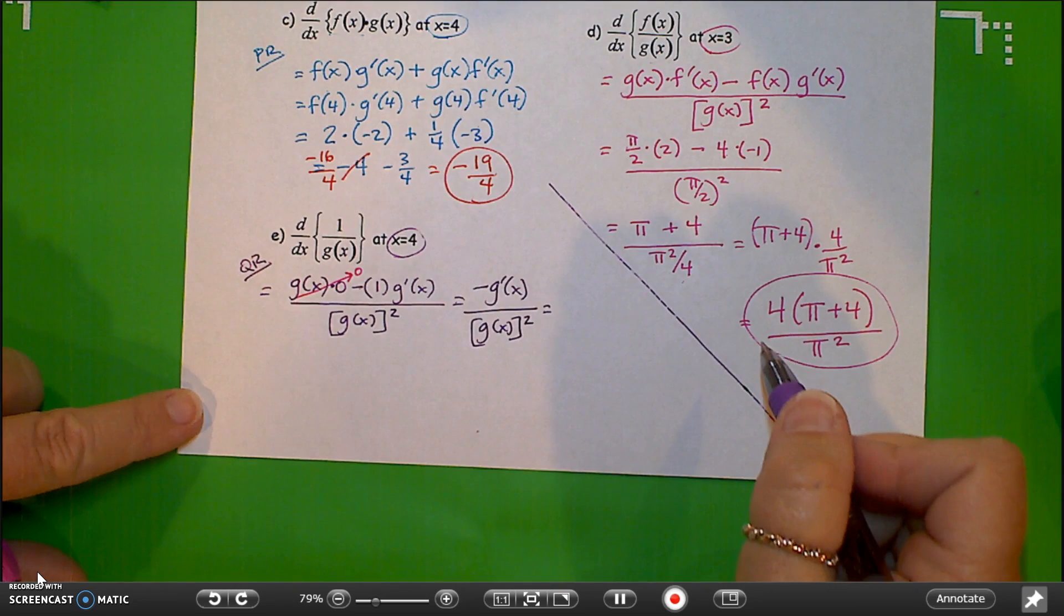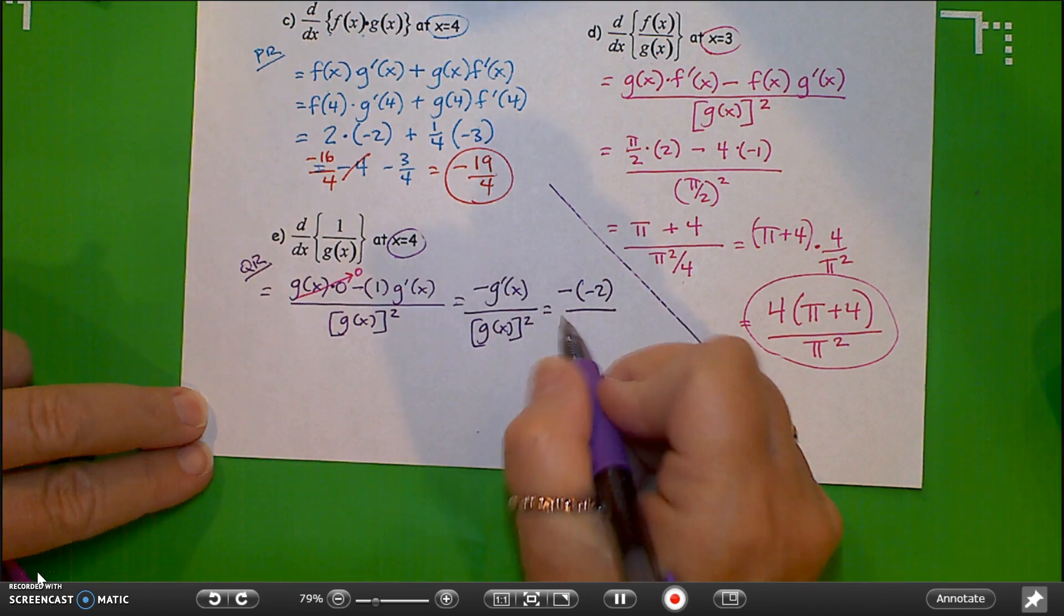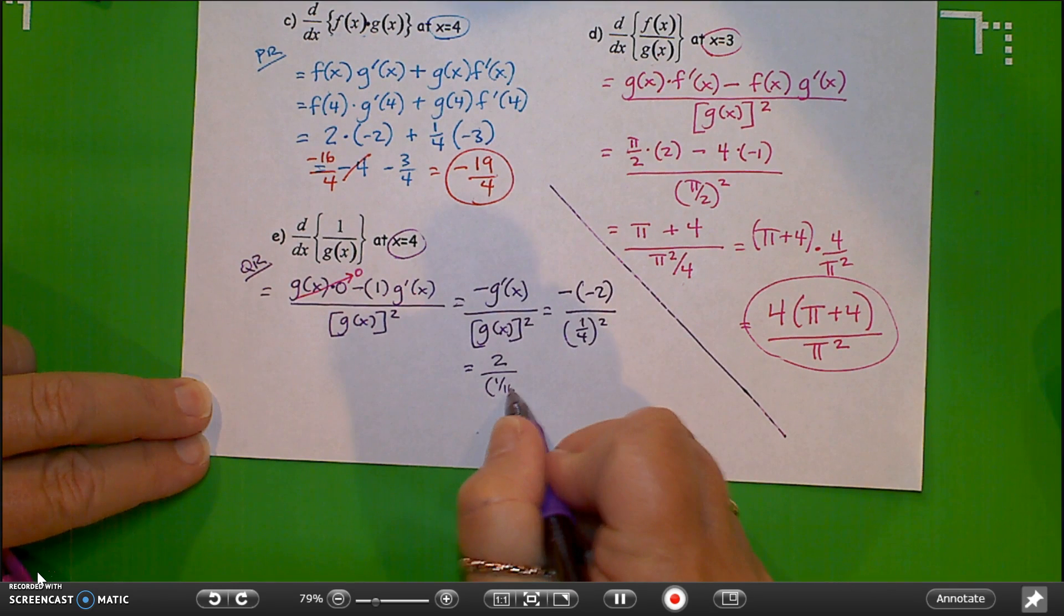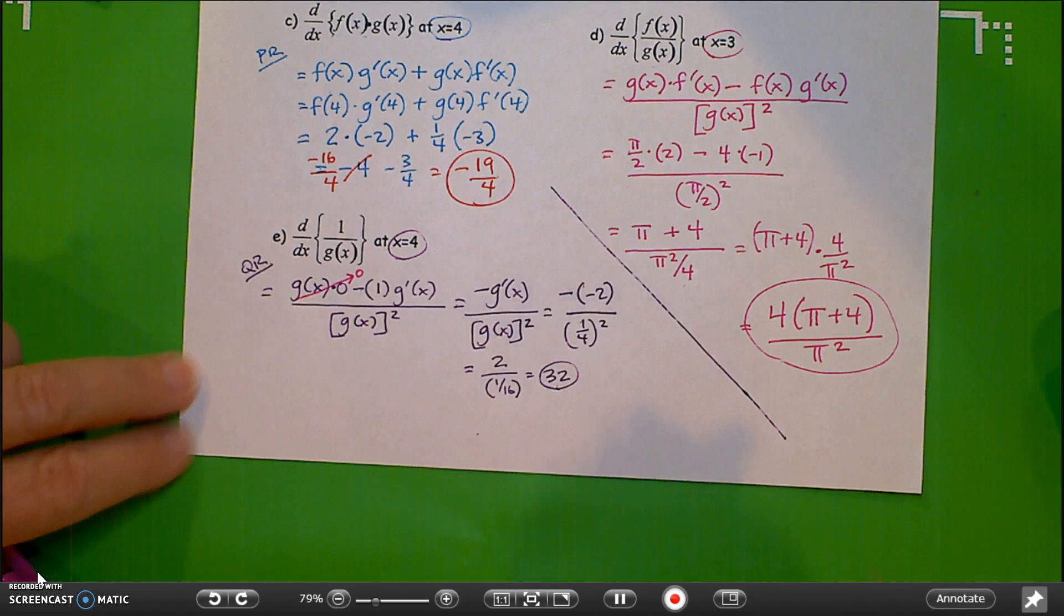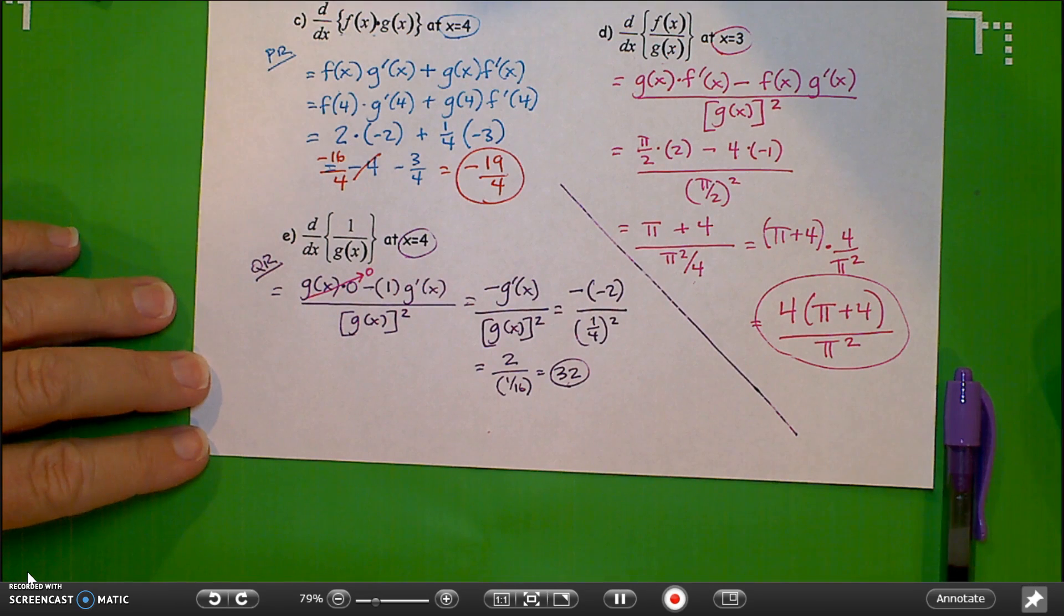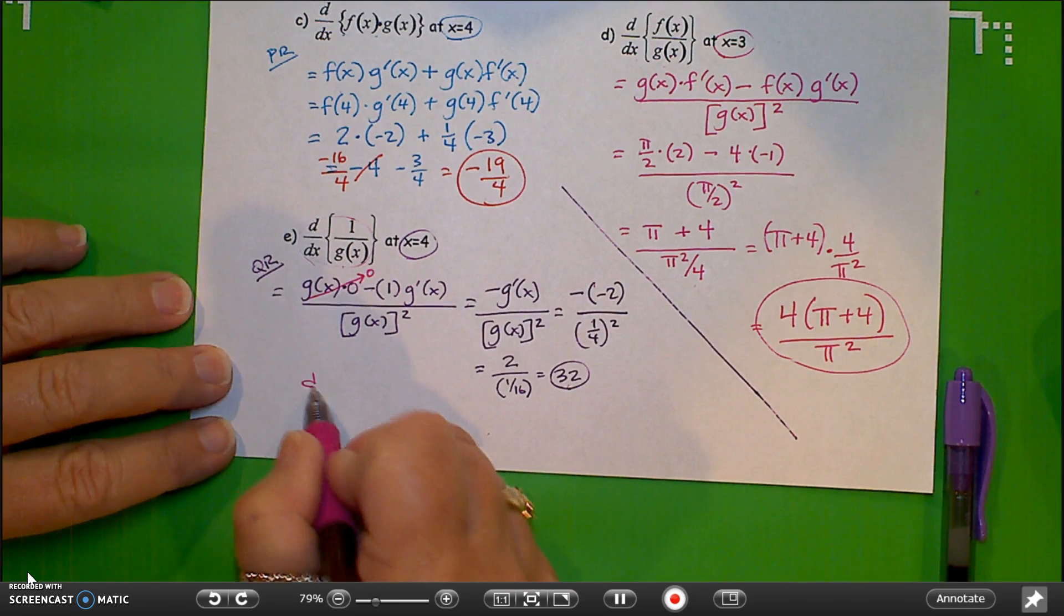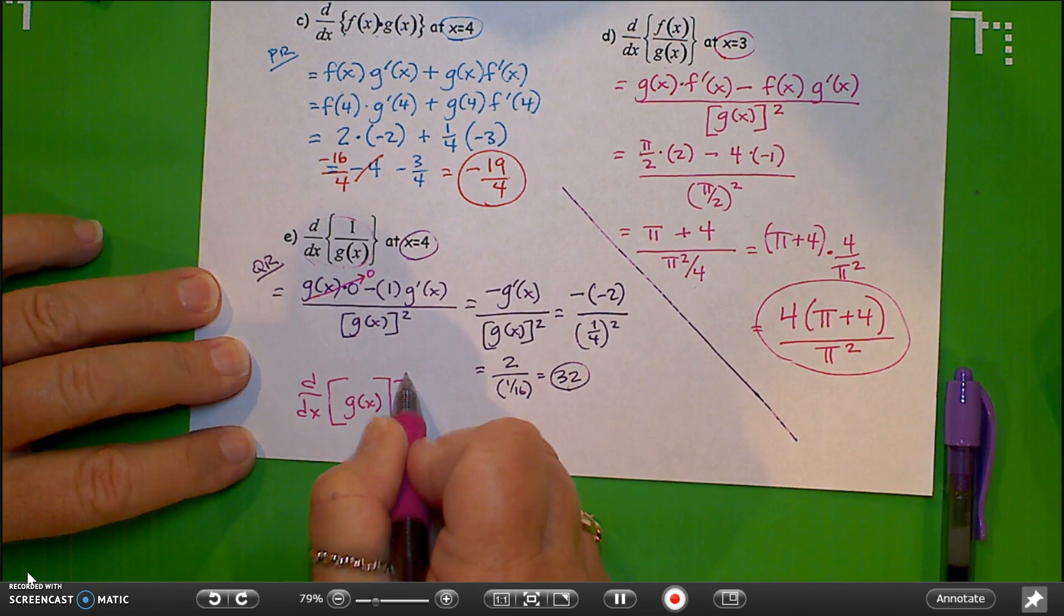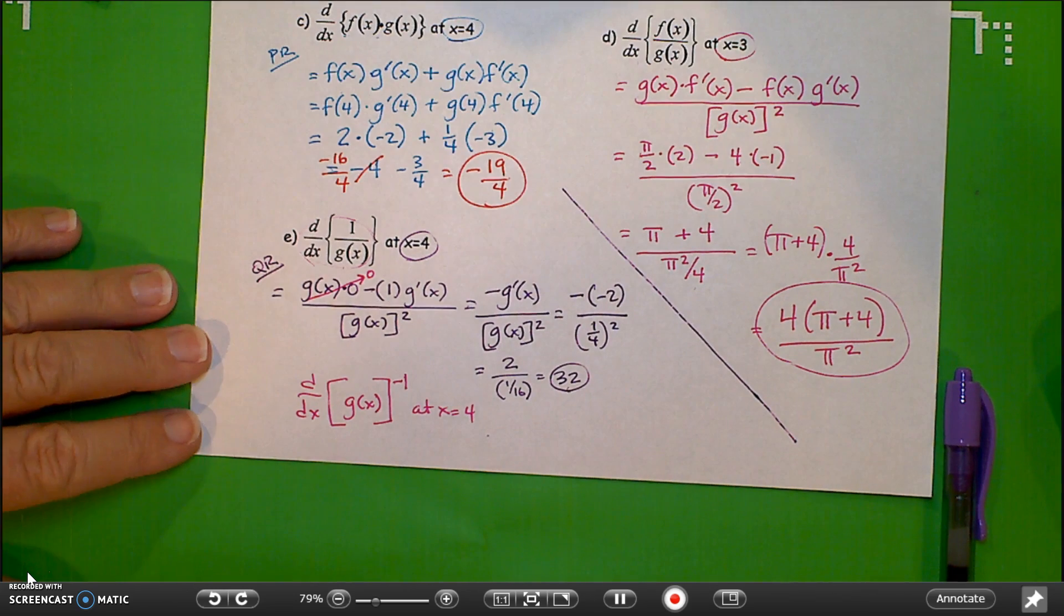So x equals 4. So I'm on the second row. g prime of x is negative 2. So I got minus negative 2 over g of 4 is 1 fourth quantity squared. So that gives me 2 over 1 sixteenth. So the same method I used on the last problem. This is the same. 2 divided by 1 sixteenth is the same as 2 times 16. So this equals 32. And actually what we could have done, actually we don't know this technique yet, so never mind. I'm just going to leave it at that. We're going to learn another technique in a later section that will help us do that. But basically, I'll go ahead and show you since I brought it up. It's basically this form. The derivative of that to the negative first power, right? So that would be another way to write that, at x equals 4. Haven't really learned how to do that yet. So I'm going to hold on that.